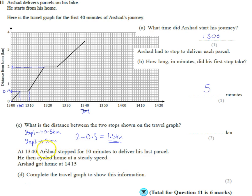Now it says that Arshad stopped for 10 minutes to deliver his last parcel. He then cycled home at a steady speed, so he cycled straight home, didn't stop on the way home, and then he got home at 14:15. Complete the travel graph.